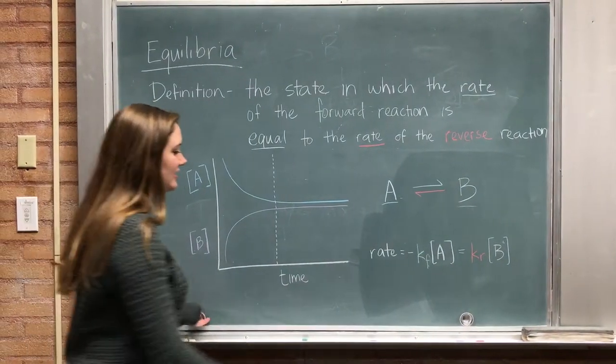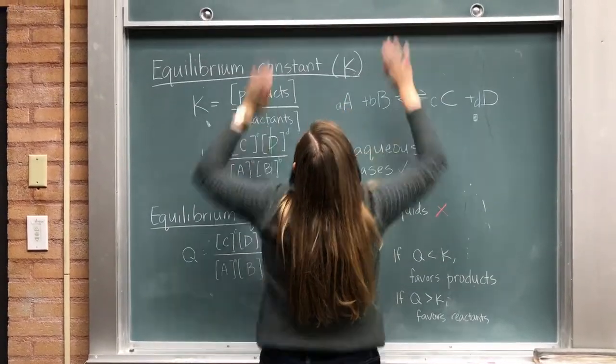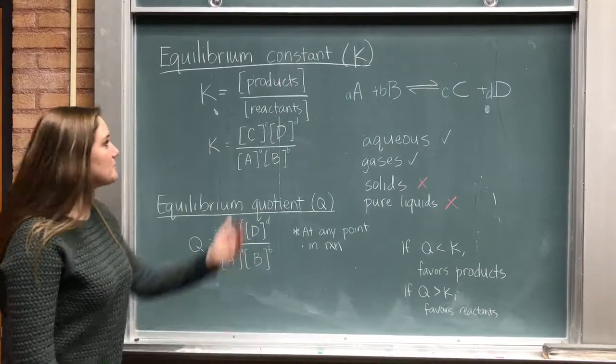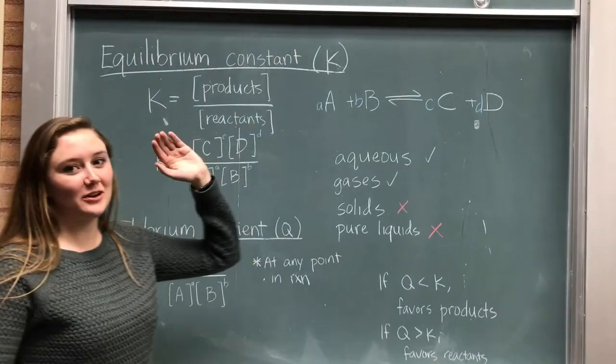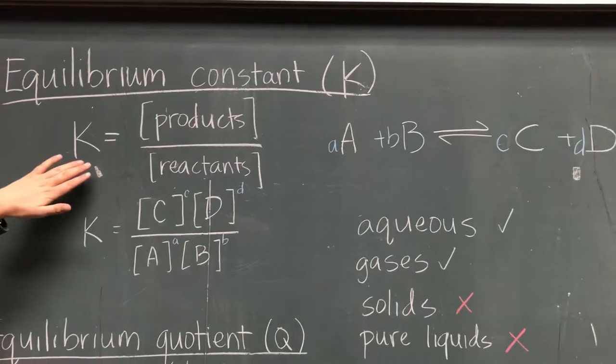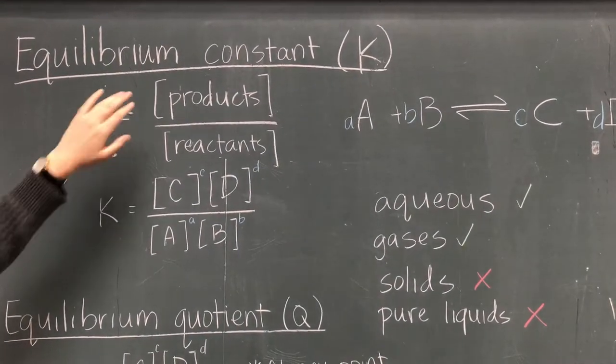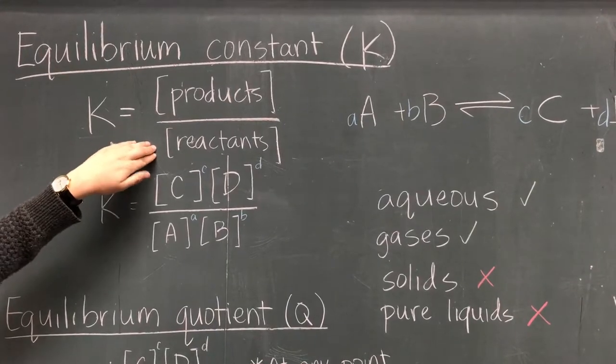So how are these concentrations related? So they're actually related via our equilibrium constant, our big K. Not to be confused with our rate constant, little k. So, in order to find our big K equilibrium constant, we're going to find the product of the concentrations of our products over the concentration of our reactants.